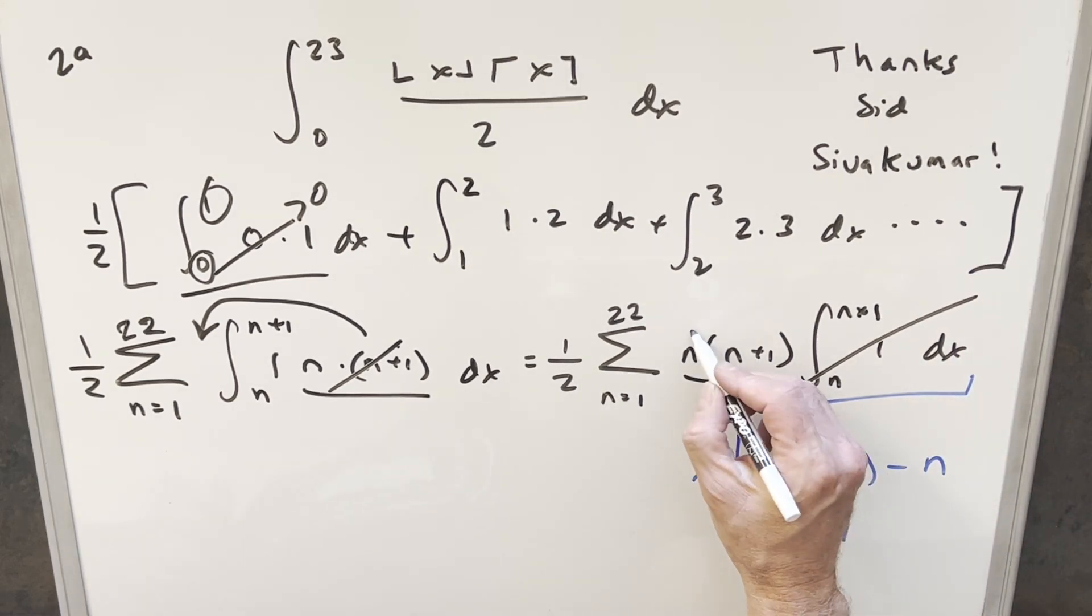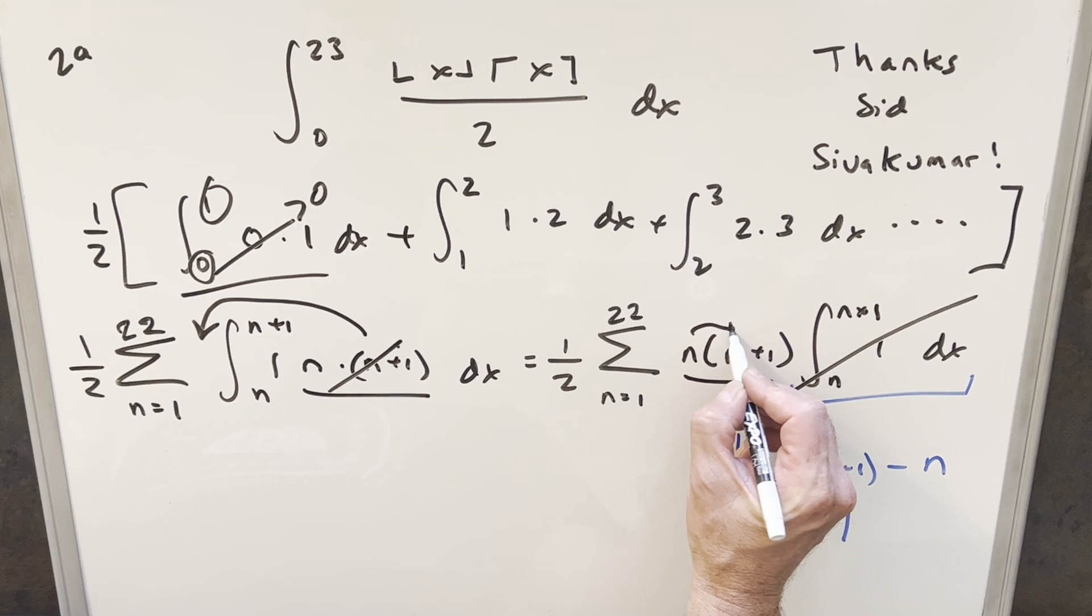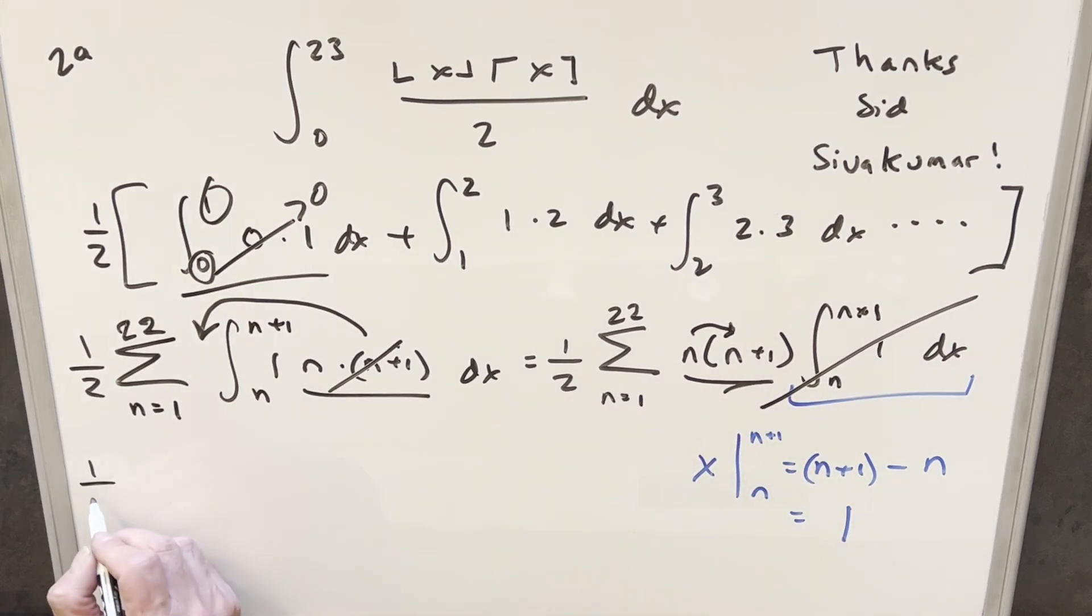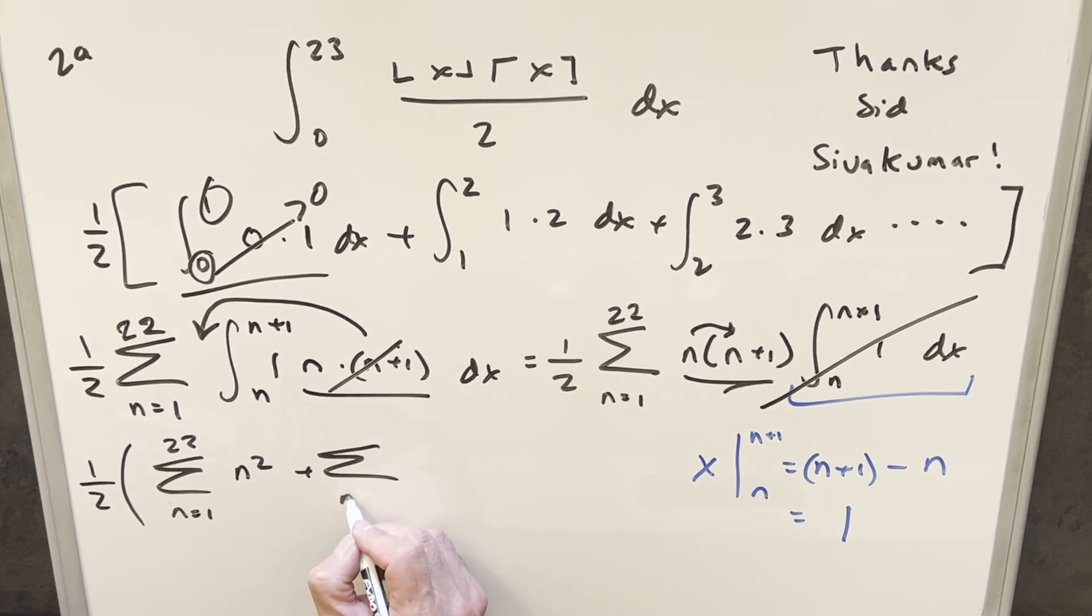But now here I can just distribute in this n, and we can then break it into two sums. So we're going to have this one half out front. Then for the first one, we're going from n equals 1 to 22 of n squared. And then for the second one, we're just have the same. We're going from n equals 1 to 22, but then this one's just going to be an n.